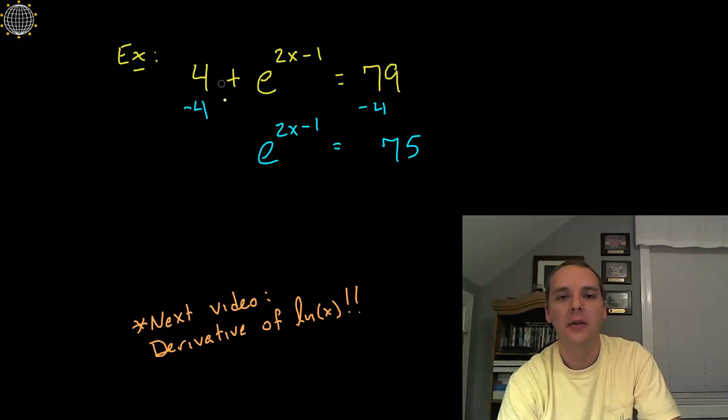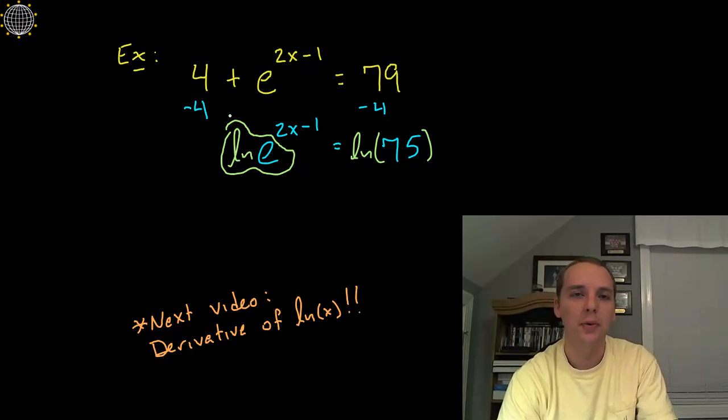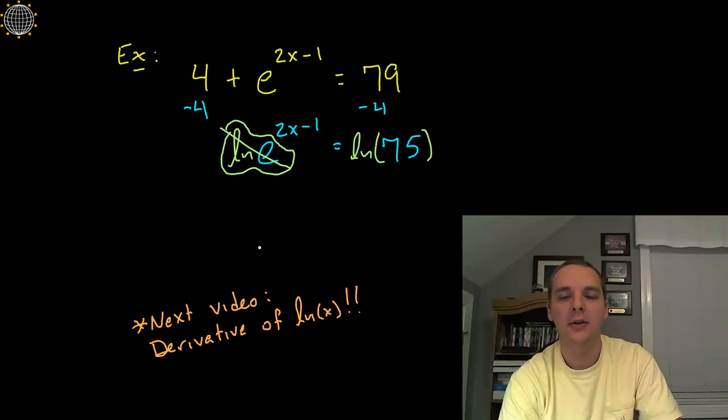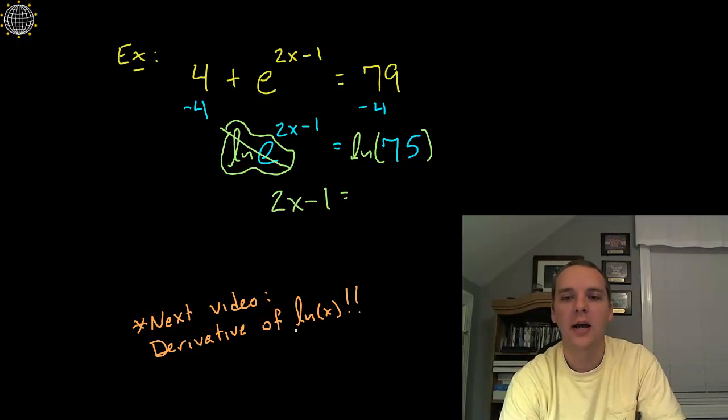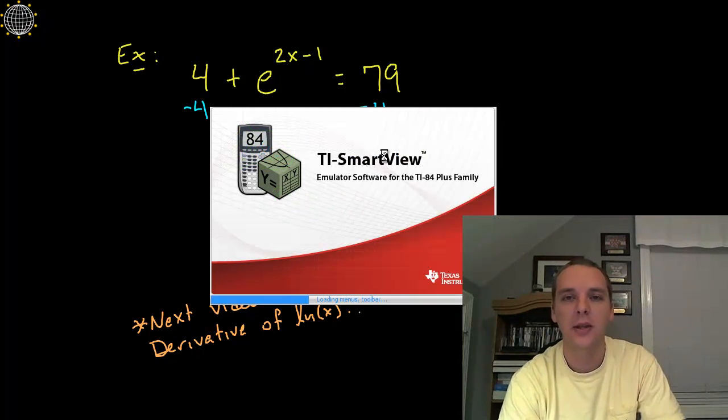And now this e is in the way. So I'm going to take the natural log of the left side and the natural log of the right side. Now the natural log of e—any time you see these guys paired side by side, it's almost like a square and a square root or a plus with a minus or a times with a divide. They will simply negate each other. They'll cancel each other and you'll have 2x - 1 = ln(75). Now the natural log of 75 is a decimal. We can figure out what that is on our TI calculator.